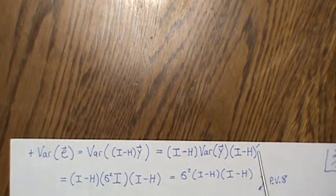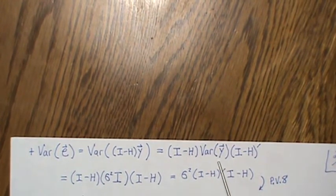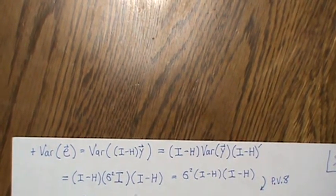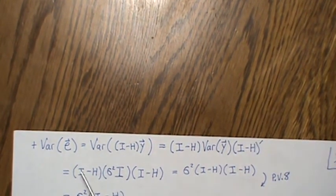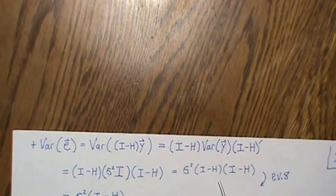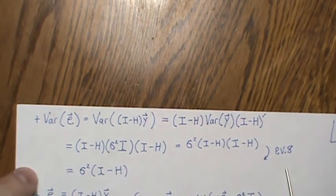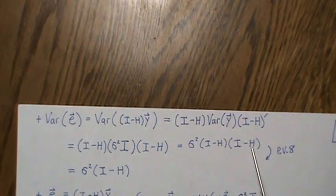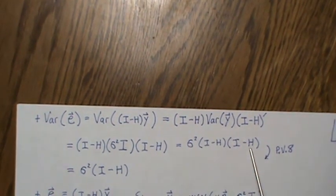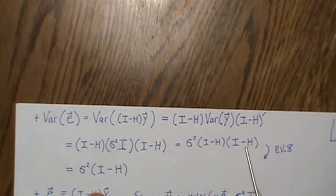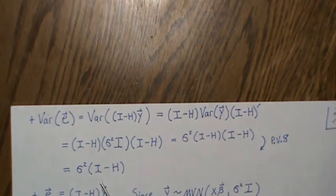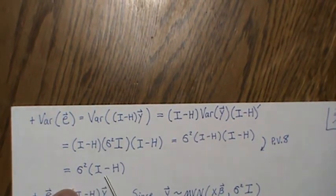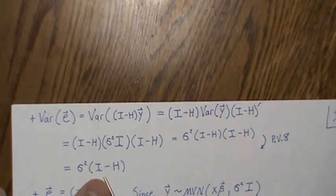For the variance: Var[e] = (I − H)Var[Y](I − H)ᵀ. Since Var[Y] = σ²I, that's a constant and comes out front: Var[e] = σ²(I − H)(I − H)ᵀ. From PV8, (I − H) is symmetric and idempotent, so (I − H)² = (I − H). We get Var[e] = σ²(I − H).